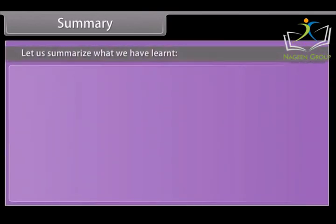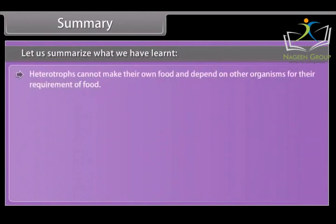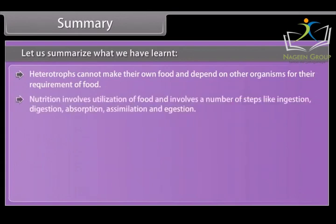Summary: Heterotrophs cannot make their own food and depend on other organisms. Nutrition involves utilization of food and includes steps like ingestion, digestion, absorption, assimilation, and egestion. Amoeba is omnivorous and holozoic.